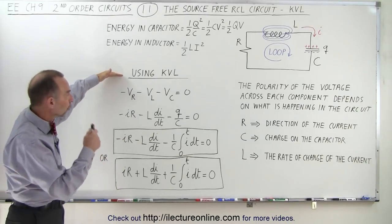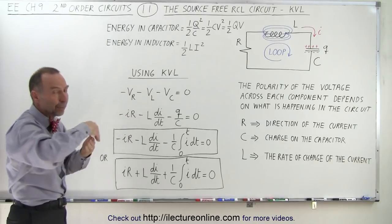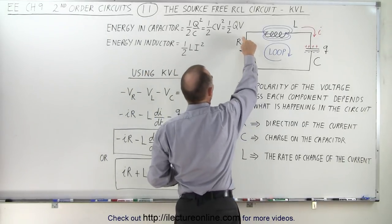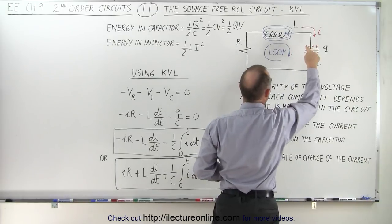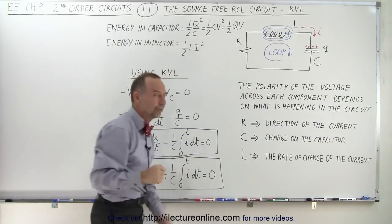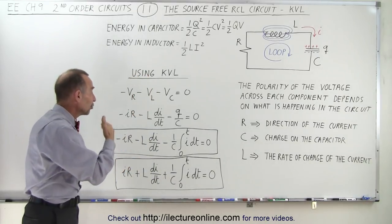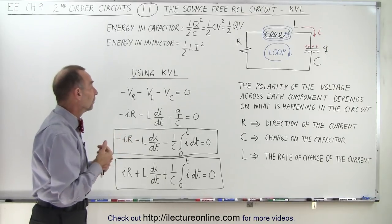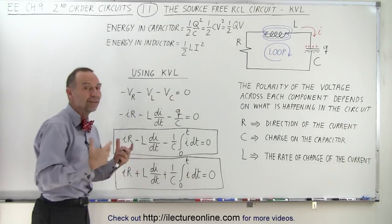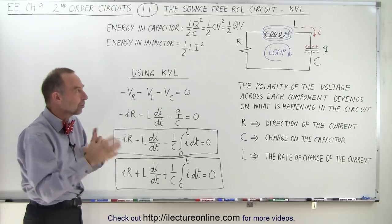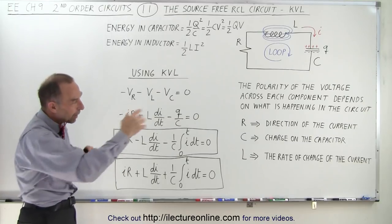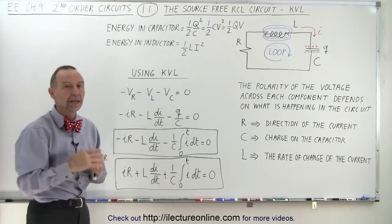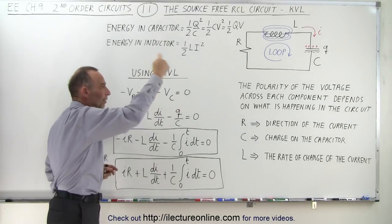Now, if we're going to use the Kirchhoff voltage loop — if we go around the loop and add up all the voltage drops across the circuit — we have a voltage drop across the resistor, a voltage drop across the inductor, and a voltage drop across the capacitor. When we add all the voltage drops, we get zero. That would imply that when you have a drop across one device, you'll have a voltage rise across at least one of the other components. So the polarity across the devices will always ping-pong back and forward, such that when you add up all the voltages at any moment in time, the sum will always equal zero as you go around the loop.